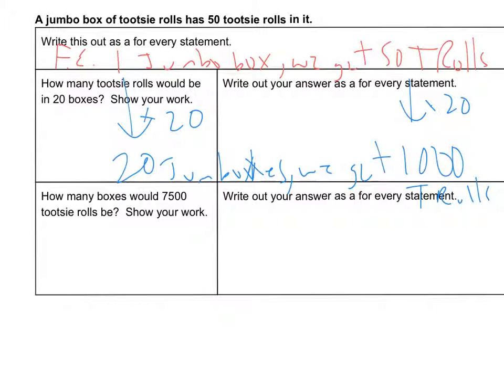And then the last problem says, let's make this a little yellow. How many boxes would 7,500 Tootsie Rolls be in? All right. So I can go from 1,000. Oh, yellow's not good. Green. I'm going to go from 1,000 to 7,500, which is times 7.5. Times 7.5. This is going to be 150 jumbo boxes.